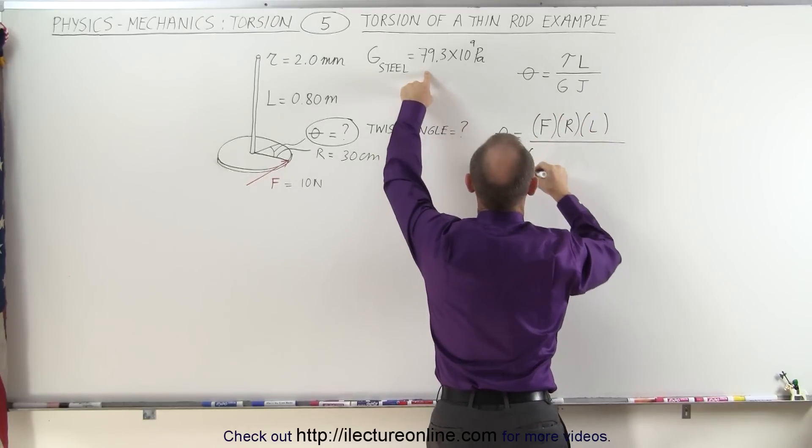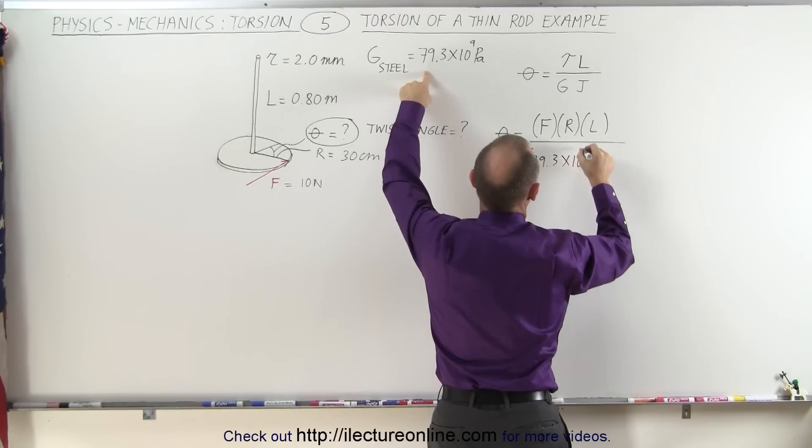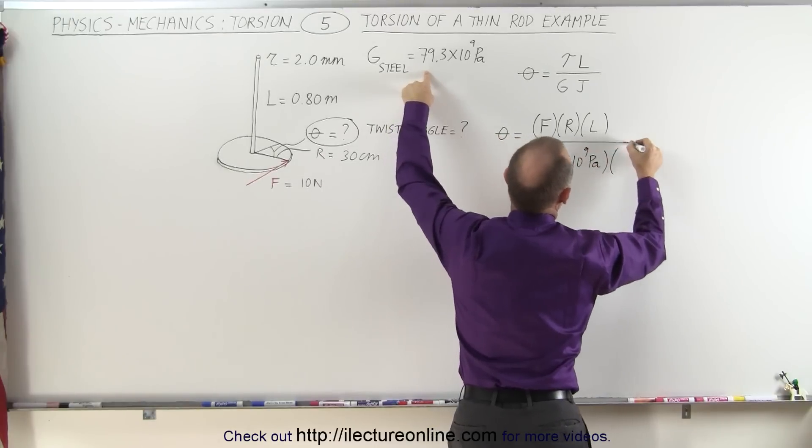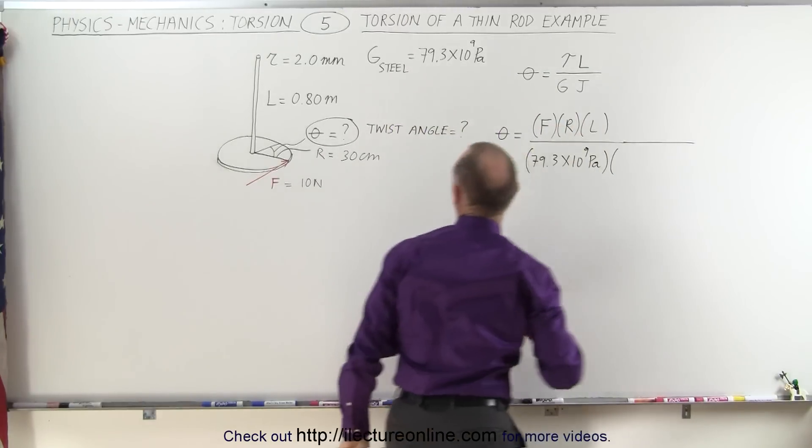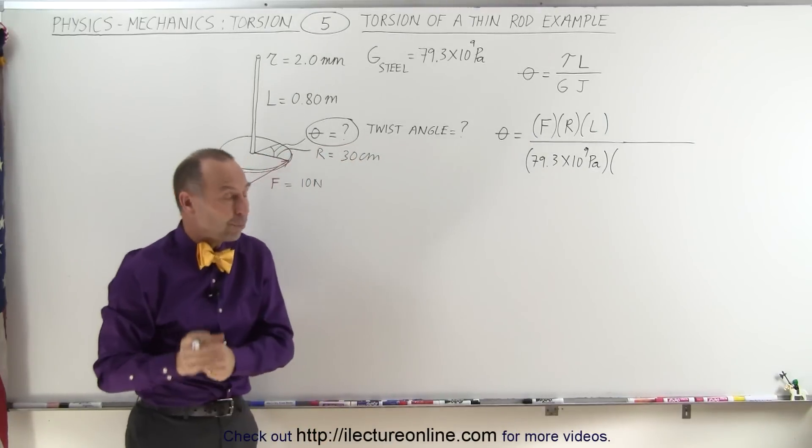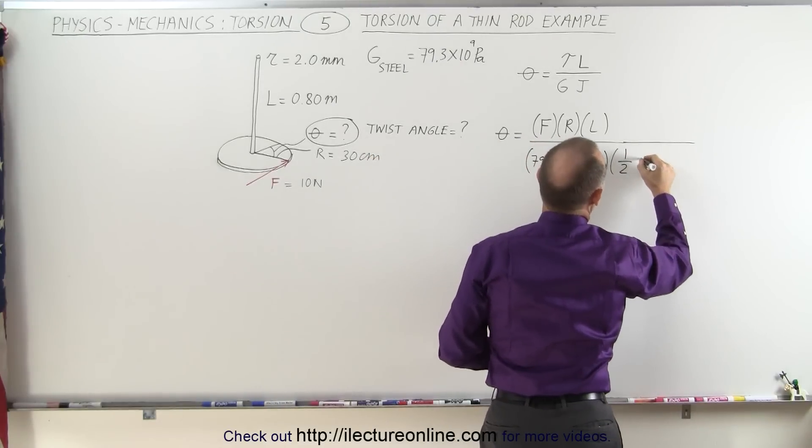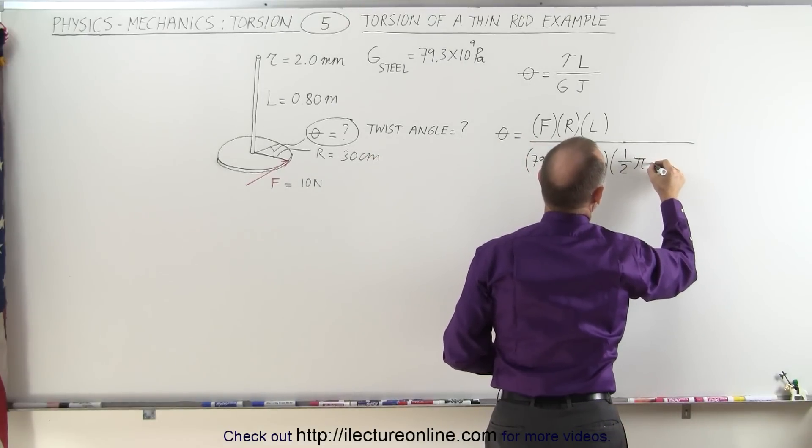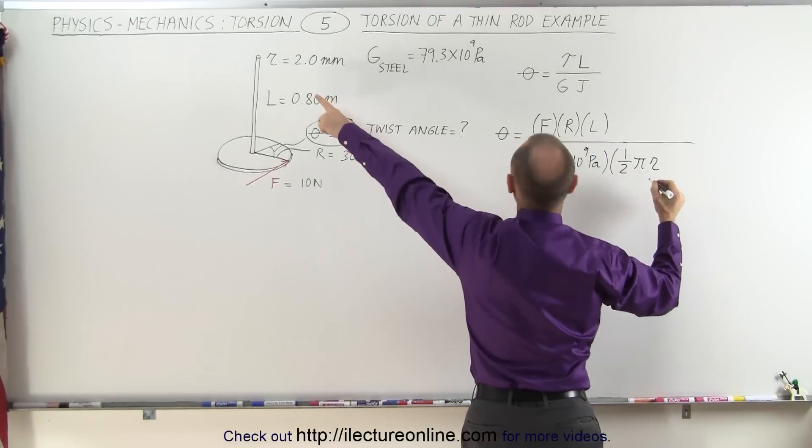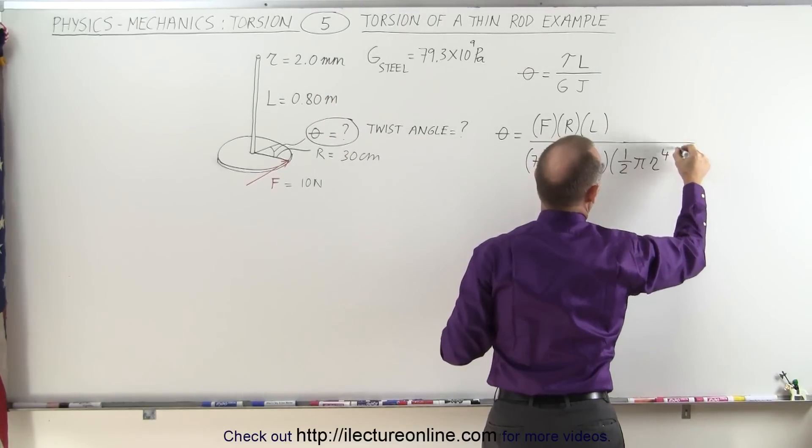And then we divide that by G, which is the constant here, 79.3 times 10 to the 9 pascals. And then we multiply that times the torsional constant for a rod, which is equal to one-half pi times the radius of the rod r to the fourth power.